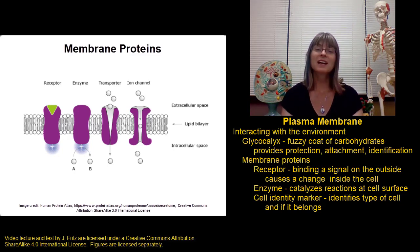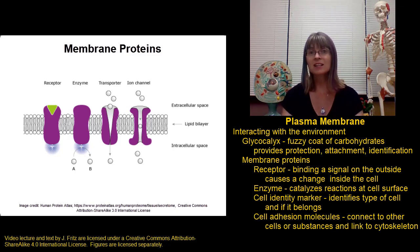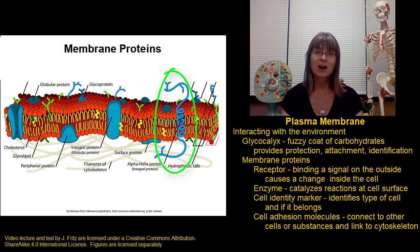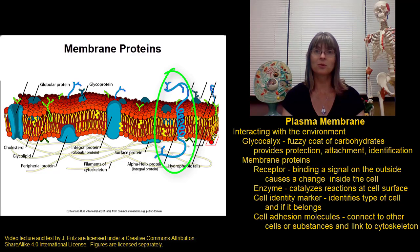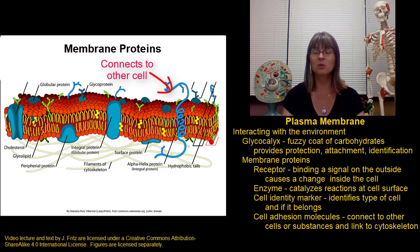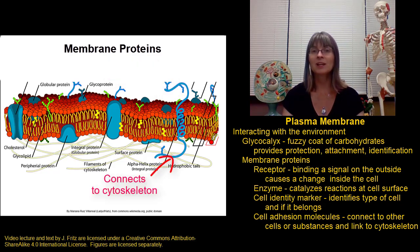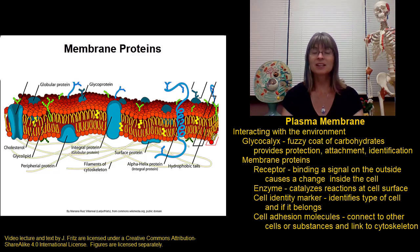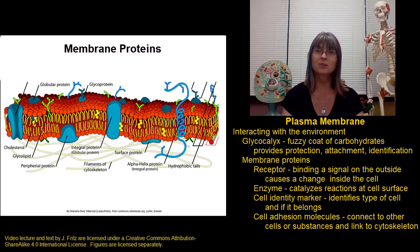Plasma membranes also contain cell adhesion molecules. These allow a cell to connect to other cells or to its surrounding environment. This is what makes it possible for us to go from being a single-cell organism to being multicellular — the ability for cells to connect to each other. The outside of the cell adhesion molecule connects to another cell or some structure in the environment, and the inside connects to the cytoskeleton of the cell, giving a strong connection to hold cells together. One example is dystrophin, which helps connect muscle cells to surrounding structures. If dystrophin is unable to make this connection, the result is muscular dystrophy — weak muscle contraction because the muscles can't attach well to the bones to move them.